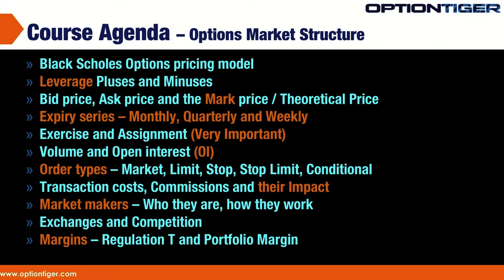The course agenda is a list of all these key elements that go into the marketplace. We'll be looking at the Black Scholes options pricing model, then jump into detailed elements by looking at various bid and ask prices. We'll look at expiry series, exercise and assignment, and important elements of every options position. We'll also look at various order types and how transaction costs affect your profitability. Then finally we'll look at market makers.